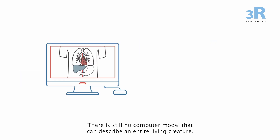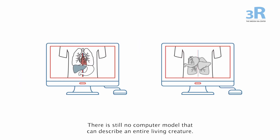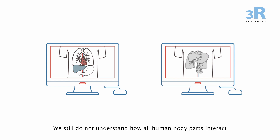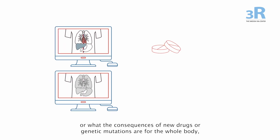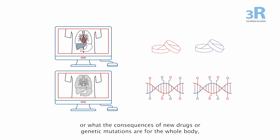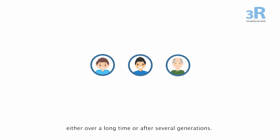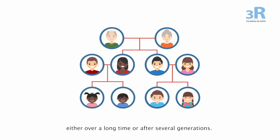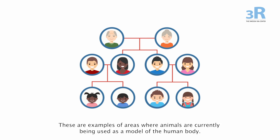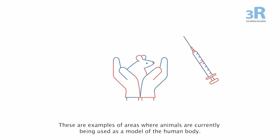There is still no computer model that can describe an entire living creature. We still do not understand how all human body parts interact or what the consequences of new drugs or genetic mutations are for the whole body, either over a long time or after several generations. These are examples of areas where animals are currently being used as a model of the human body.